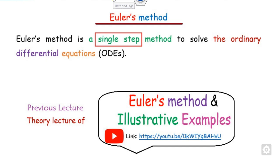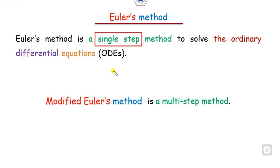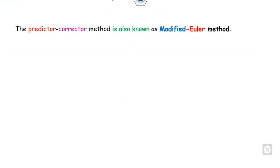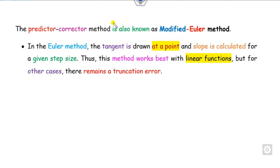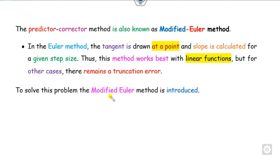The Euler method is a single-step method, as discussed in the last lecture. However, the modified Euler method is a multi-step method, also called the predictor-corrector method. In the Euler method, the tangent is drawn at a single point and the slope is calculated at a given step size. This method gives the exact solution only for linear functions; for other cases, a truncation error remains. The modified Euler method is introduced to overcome this limitation.